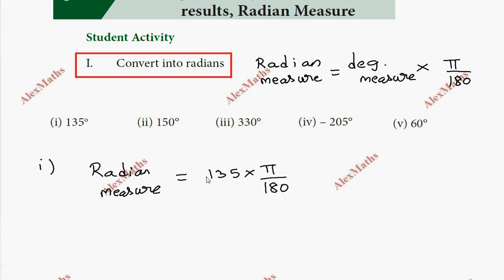The π will cancel. So we simplify: 135 divided by 180. We can cancel — 135 and 180 share a factor. Simplifying gives us 3π/4. So the answer for 135 degrees is 3π/4 radians.